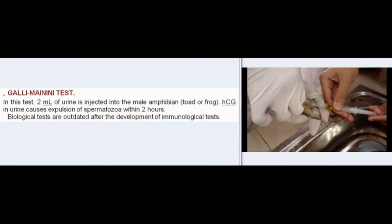In the Galli-Mainini test, 2 ml of urine is injected into the male amphibian — toad or frog. HCG in the urine causes expulsion of spermatozoa within two hours.